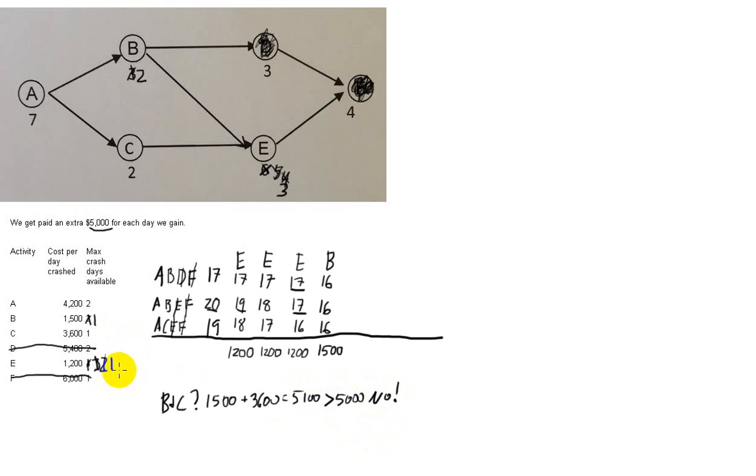It looks like we're done crashing B and C together. The only remaining option is to crash A. So we're going to crash A. And that's going to reduce the time of anything with an A in it. So this is down to 15, this is down to 15, this is down to 15. And the cost of that was 4,200. If you want to keep track, keep running total there. A is down to six days, and we had one day available left that we could crash it.